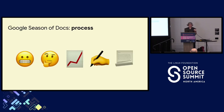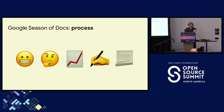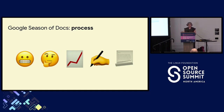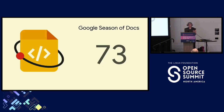How does Season of Docs work now? First, have a problem — be an open source project or organization and have a problem. This is the easiest step; almost every project can accomplish this. Then think: what documentation might help solve this problem? How are you going to measure the success of that documentation? What's your hypothesis? Then you actually pay, with the grant money Google gives you, a technical writer to work on the documentation project. Then you write a case study to share what you've learned with other open source projects. That's the whole program. So far, we've published 73 case studies since 2021, and we just announced the 11 participating organizations for this year last week.